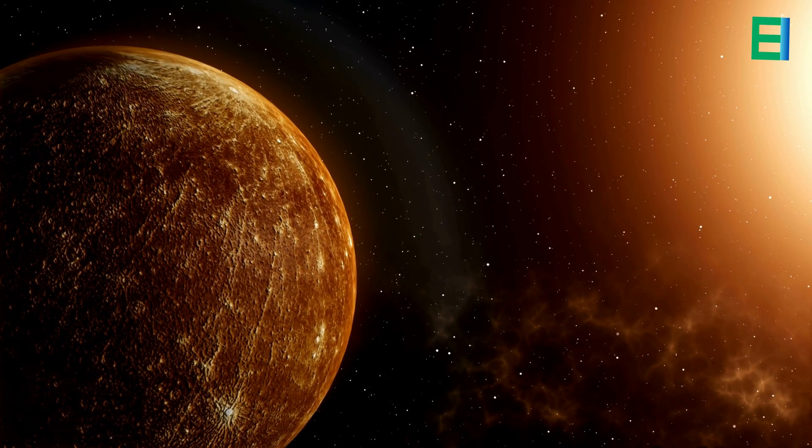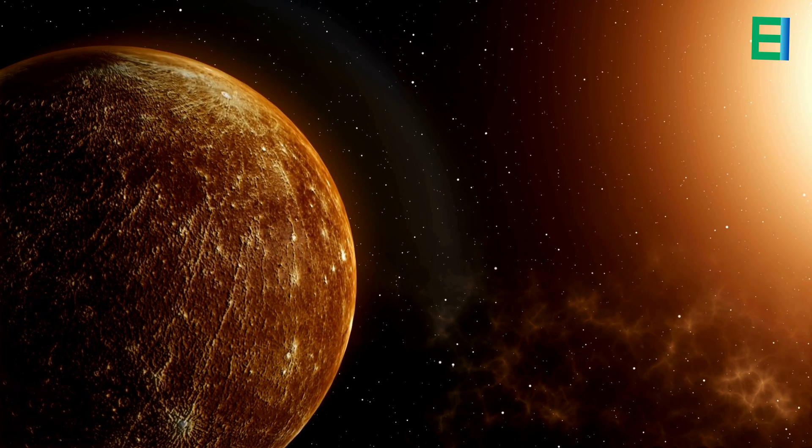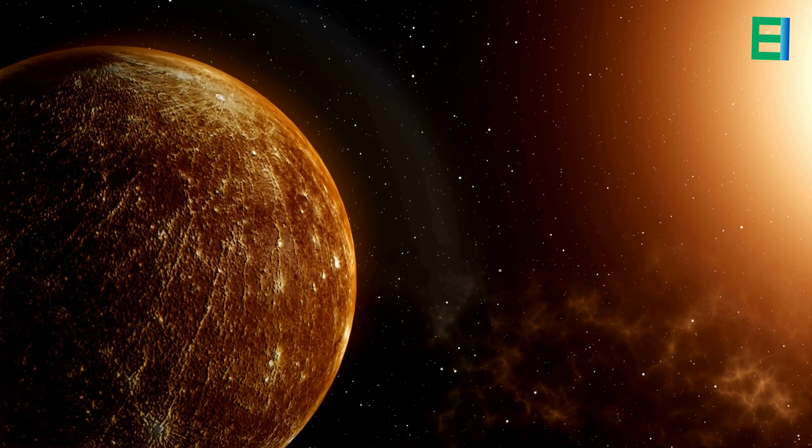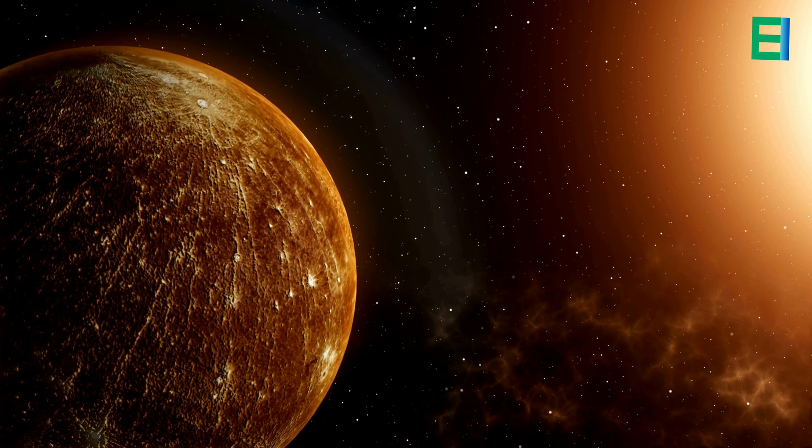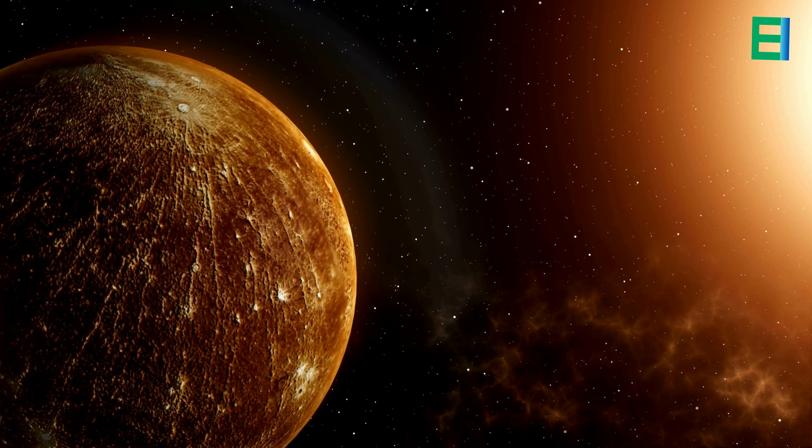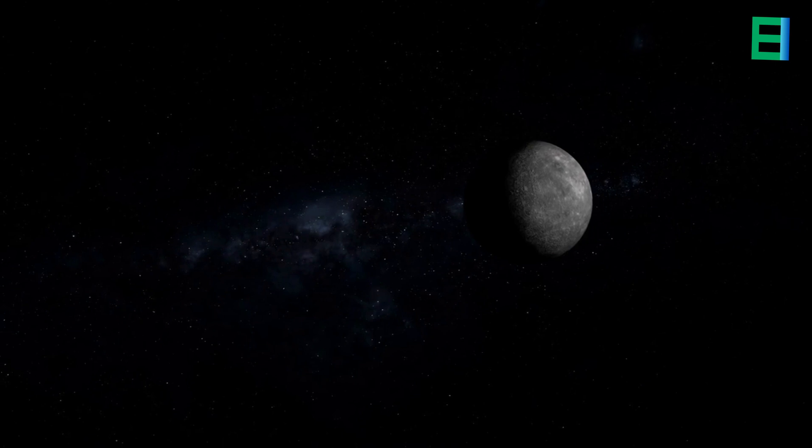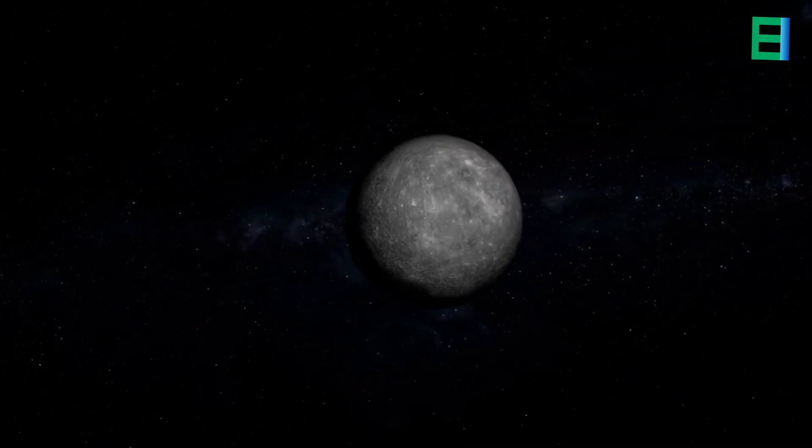When observed from the surface of Mercury, the sun would seem over three times larger compared to its appearance from Earth, and the intensity of sunlight would be up to 11 times brighter. This intricate interplay between Mercury's elliptical orbit, rotational dynamics, and varying proximity to the sun paints a captivating picture of the planet's celestial dance through space.